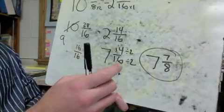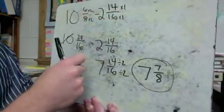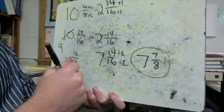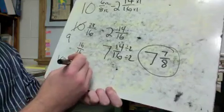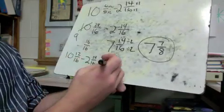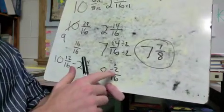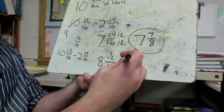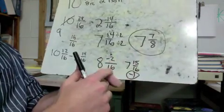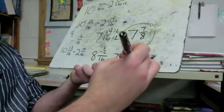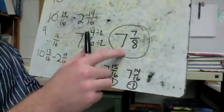Using the other method: ten and twelve-sixteenths minus two and fourteen-sixteenths. Ten minus two is eight, twelve minus fourteen is negative two-sixteenths. Working backwards negative two from eight — my whole is sixteen — so the next one down is seven and fifteen-sixteenths, taking off one sixteenth. Taking off another sixteenth gives seven and fourteen-sixteenths. Remember that's not your final answer — you still have to reduce. Dividing by two still gives us seven-eighths.